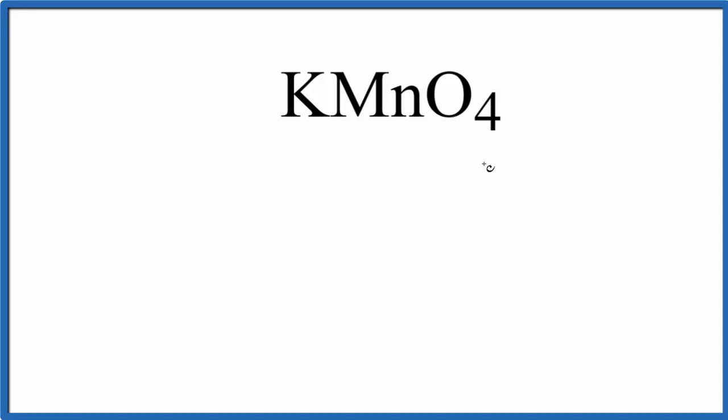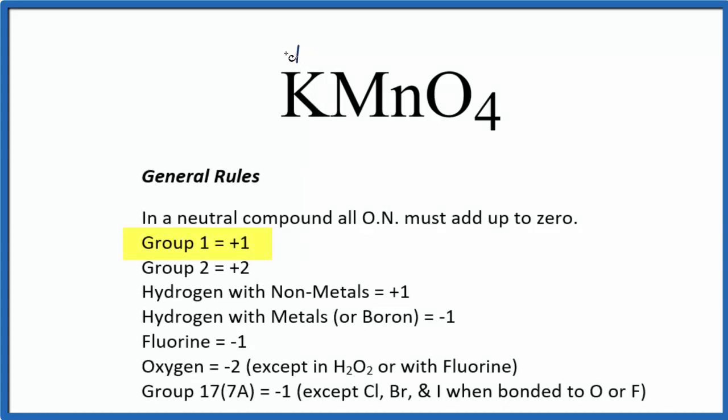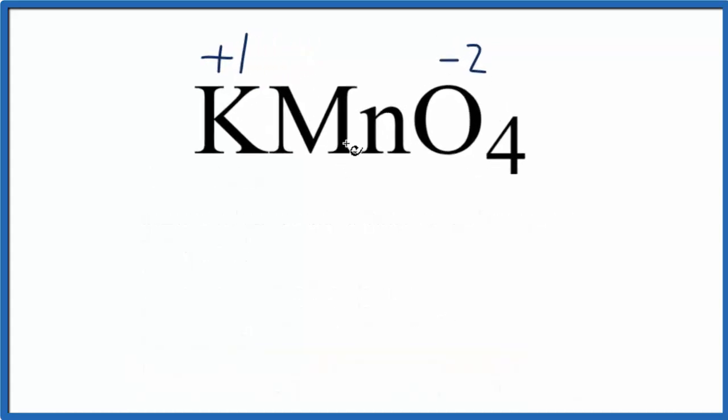We know that if we add all the oxidation numbers up, that's going to equal zero. We also know that potassium is in group 1, so it has a plus 1 oxidation number, and then oxygen is almost always minus 2, just a few exceptions. So we can use these numbers to figure out what the Mn is.